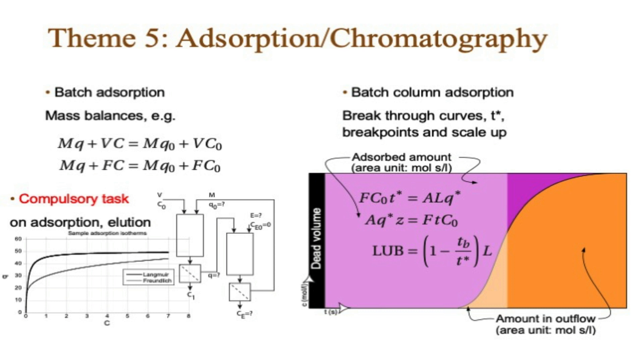In the fifth theme we build on flow in porous media covered in the previous theme and talk about adsorption isotherms, batch adsorption processes, and how to carry out design calculations using mass balances. We also cover batch column adsorption, or more precisely chromatography, using breakthrough curves and how to scale them up by considering what happens with T-star and the length of unused bed during upscaling. The compulsory task in this theme is similar to what an exam task could look like. Size exclusion chromatography is also included in this theme.